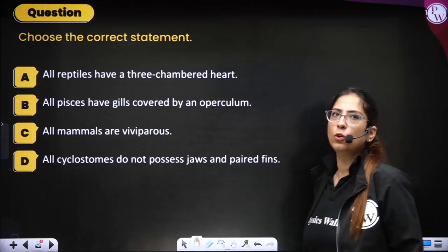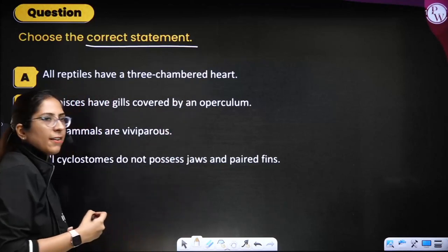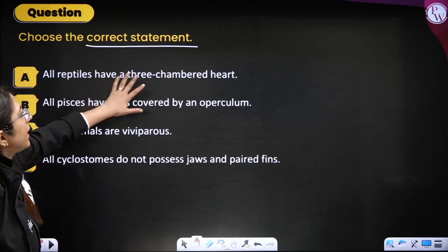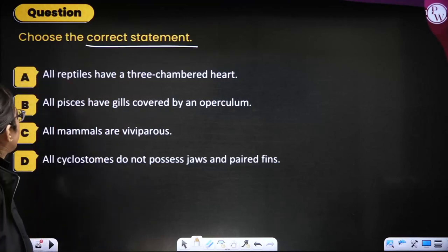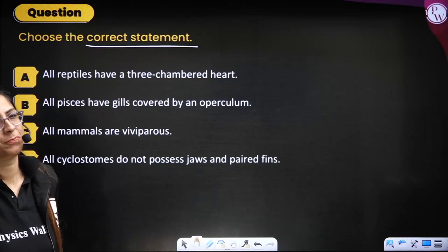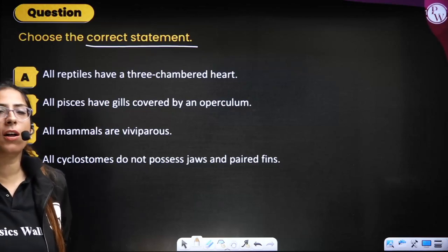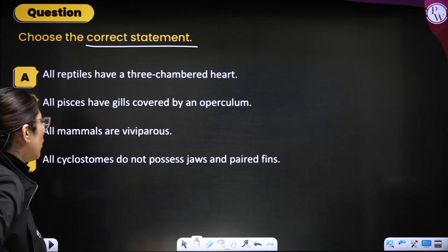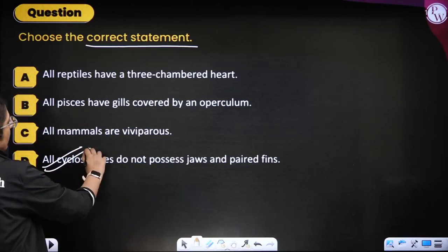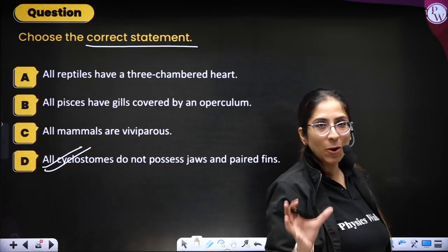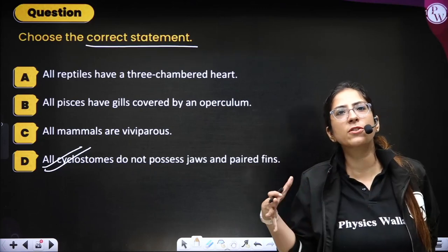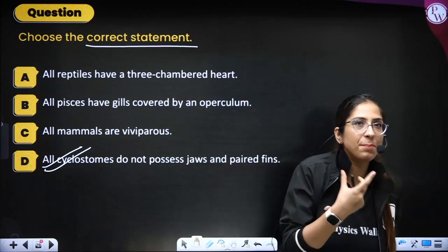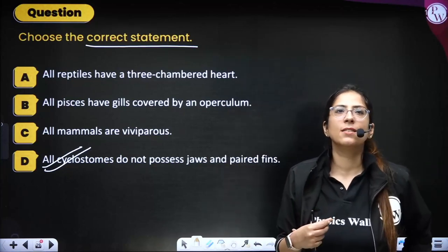Choose a correct statement. All reptiles have a three-chambered heart — No, crocodile has four-chambered heart. All Pisces have gills covered with operculum — No, only bony fishes have gills covered with operculum. All mammals are oviparous — No. Cyclostomes do not possess jaws and paired fins — Yes, this is right. You must have noticed that these topics — crocodile's heart, cyclostomes — are examiner's favourites; questions keep coming from these topics.